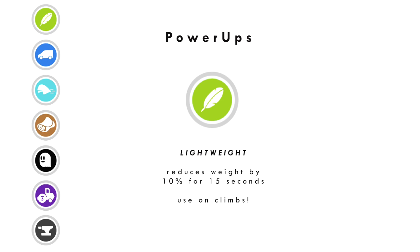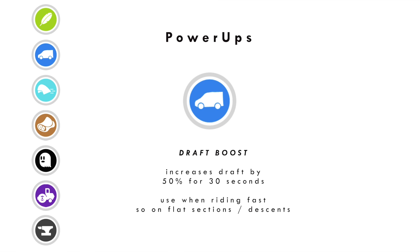The lightweight power-up is the feather icon — it reduces your weight by 10% for 15 seconds. Use this on climbs when weight matters most. The draft boost is the van icon — this increases your draft effect by 50% for 30 seconds. Use this at higher speeds on flats or descents when you're already drafting another rider, as it only helps when you're actually drafting someone.